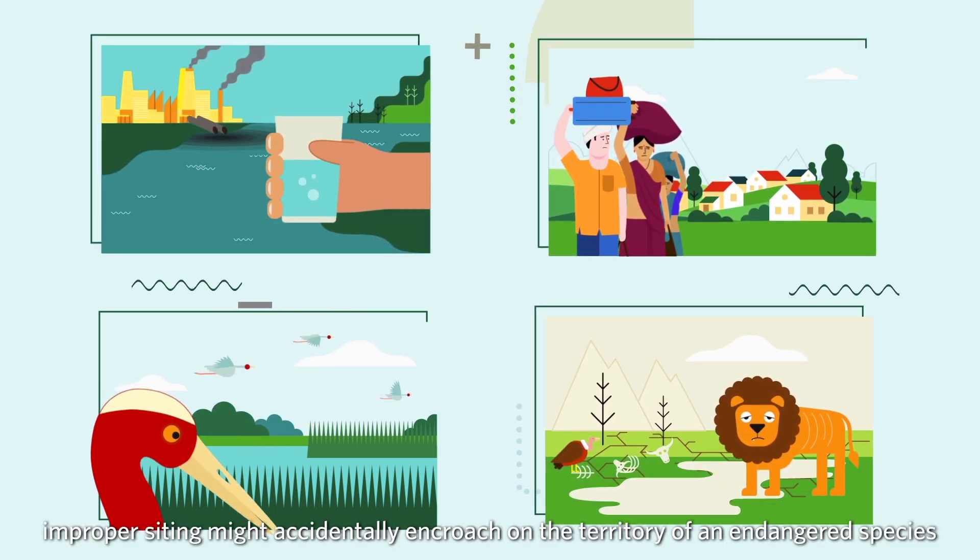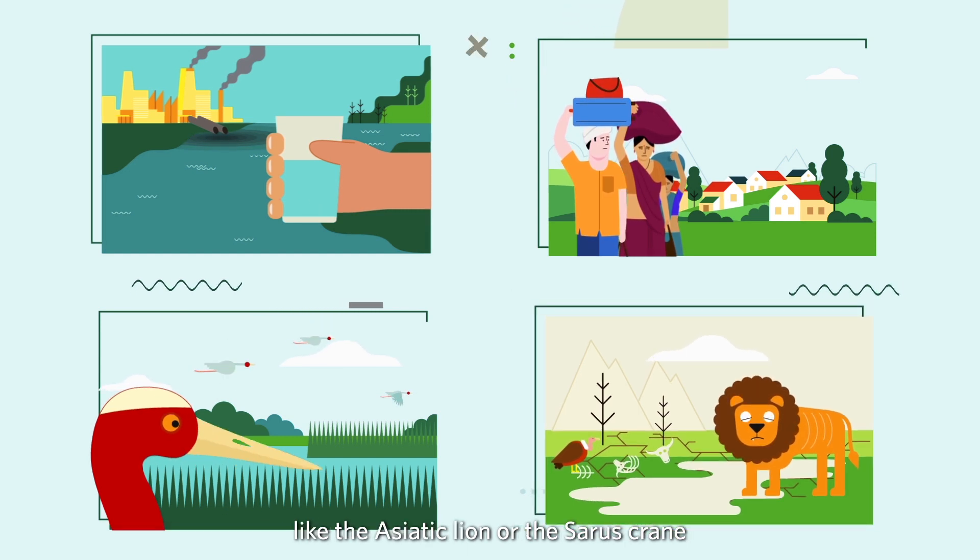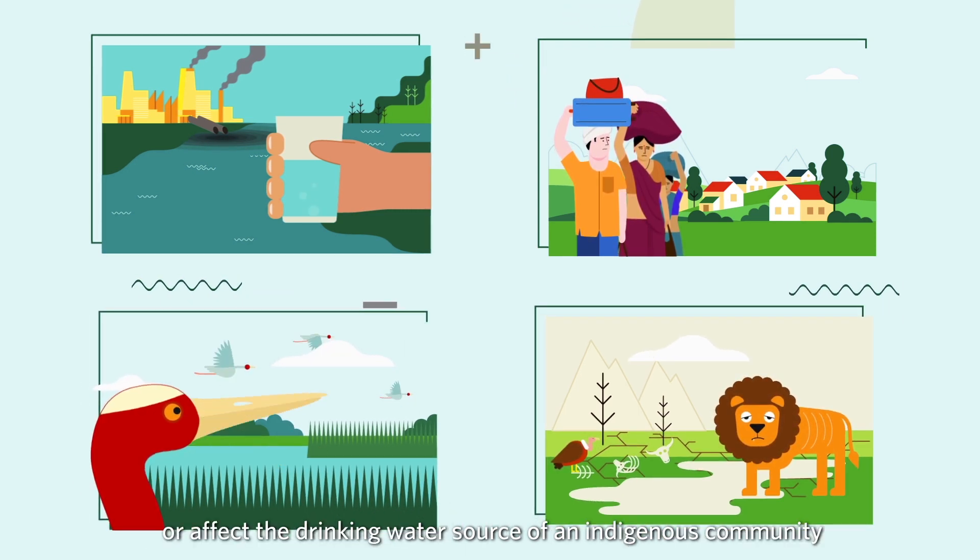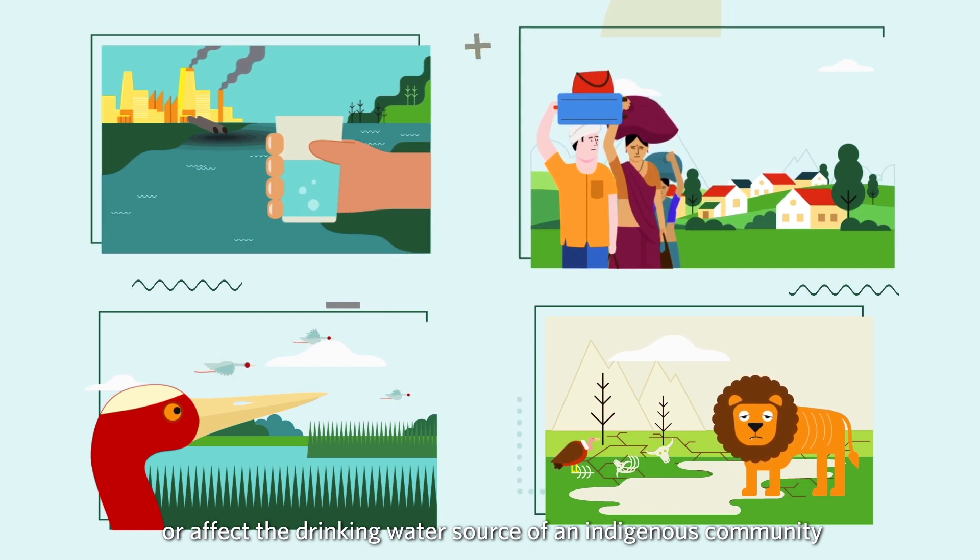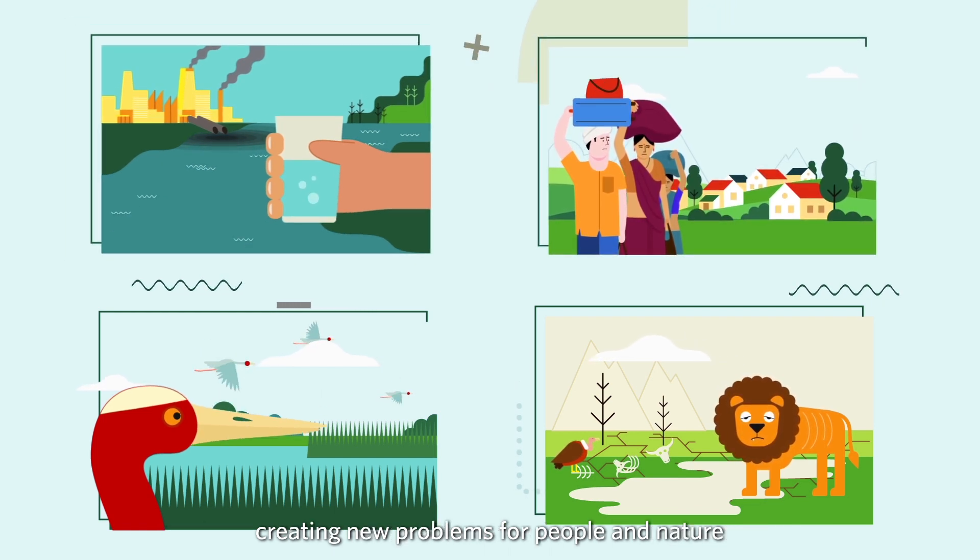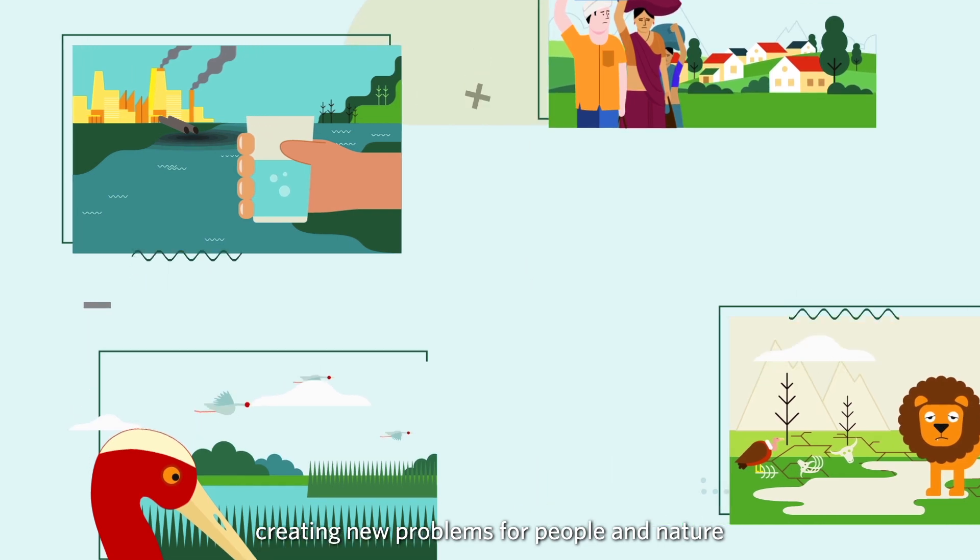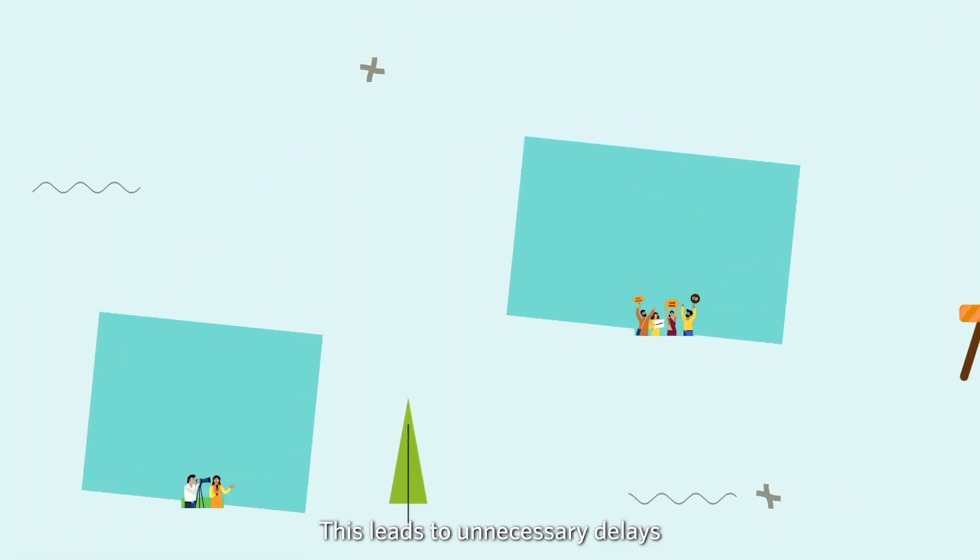siting might accidentally encroach on the territory of an endangered species like the Asiatic lion or the Sarus crane, or affect the drinking water source of an indigenous community, creating new problems for people and nature. This leads to unnecessary